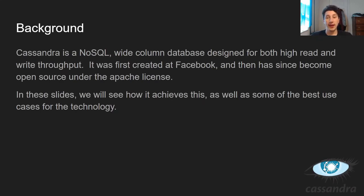So anyways, let's get into it, and we can keep going into more technologies and more deep dives into concepts. Episode 19 is about Apache Cassandra. So what is Cassandra? It is a NoSQL wide-column database designed for really high read and especially write throughput.